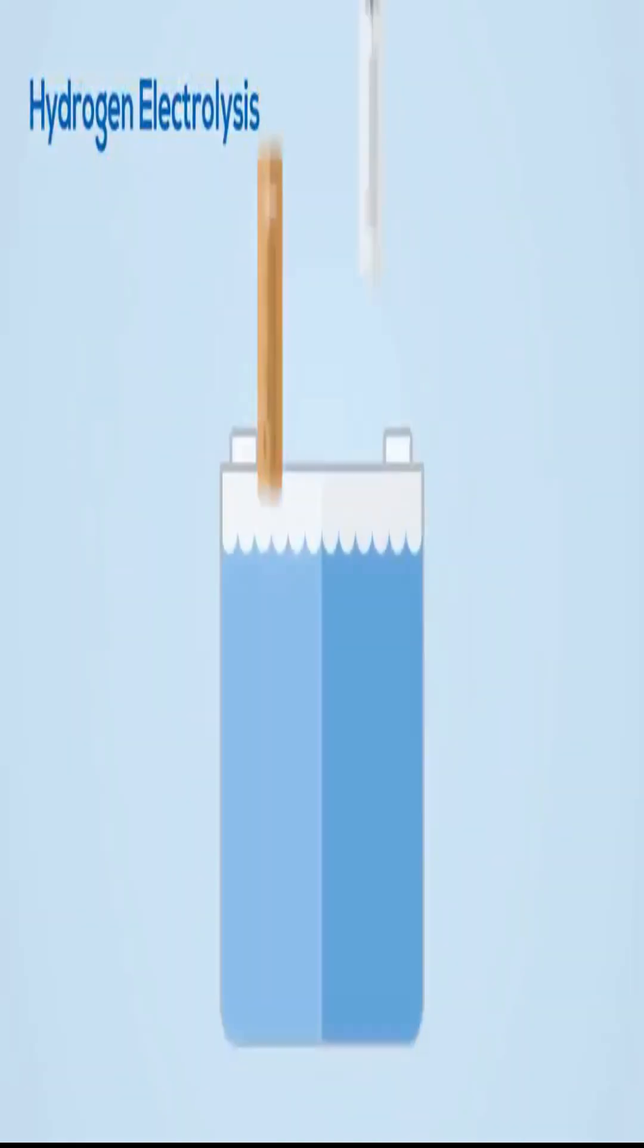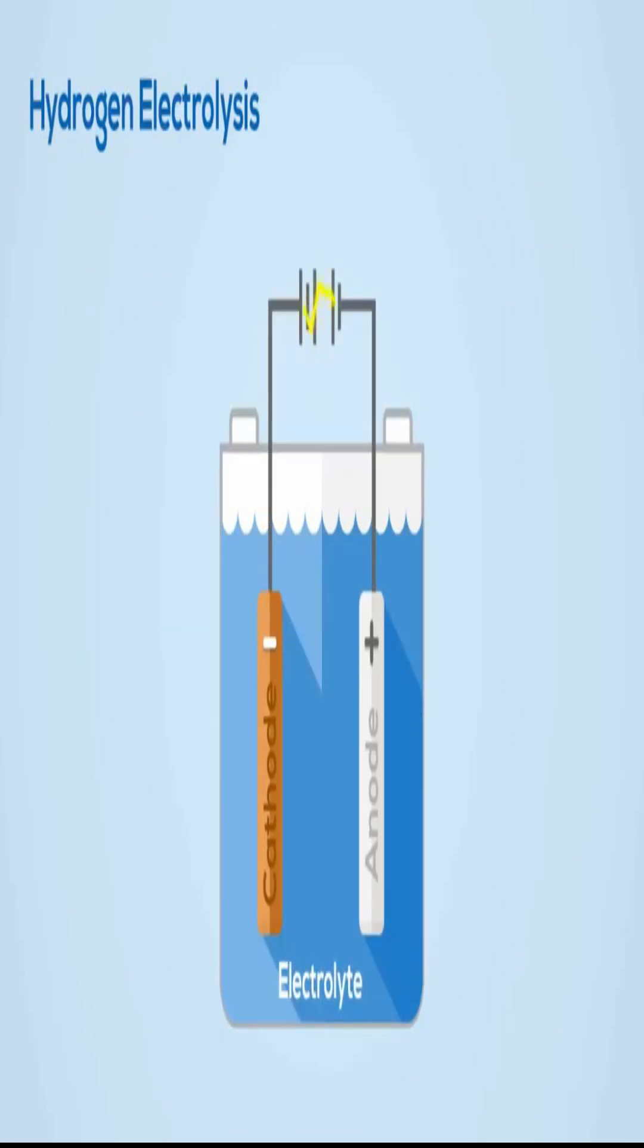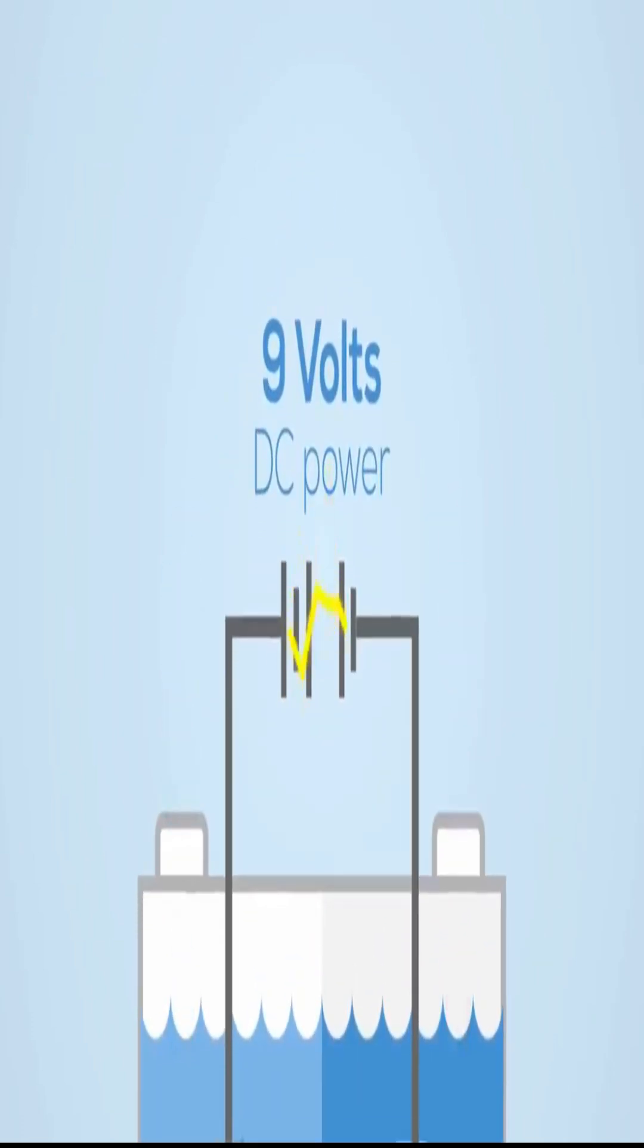You may remember your high school chemistry teacher using low voltages to create reactions in various solutions. This is the electrolytic process and can be used to split water into hydrogen and oxygen.